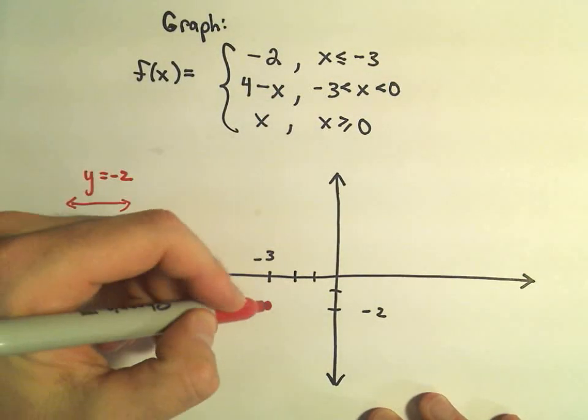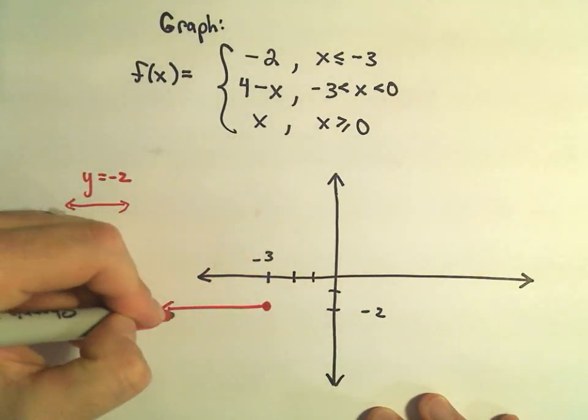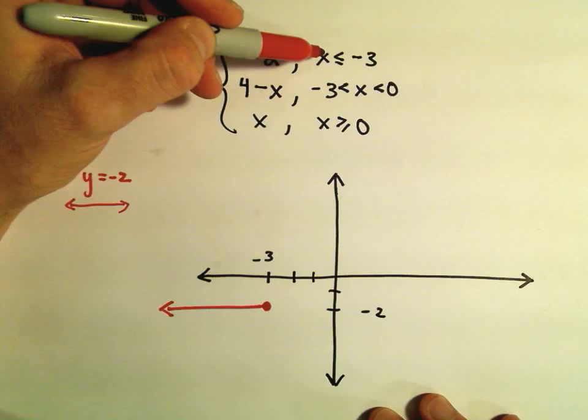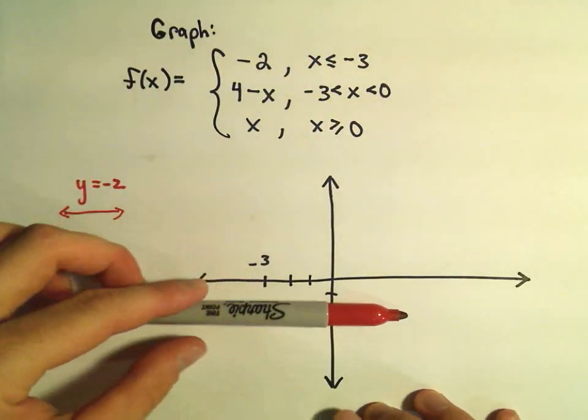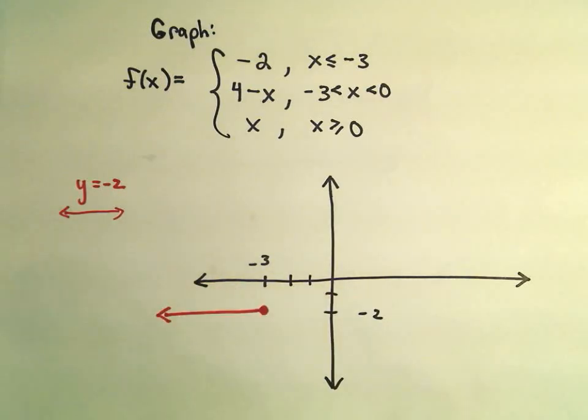Then it says it has that shape forever and ever and ever for all x coordinates less than or equal to negative 3. So we're getting that segment of the line up to and including negative 3, but then it stops.